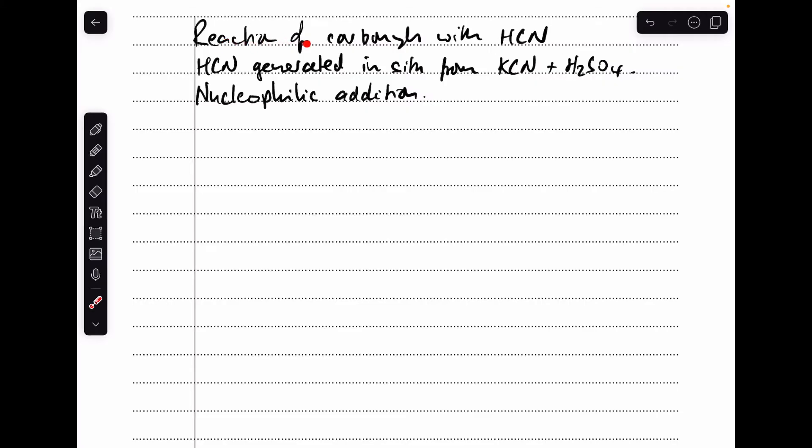I'm just going to run it the same sort of format as the first one. So this is the reaction of carbonyls, so aldehydes or ketones, with hydrogen cyanide. The hydrogen cyanide is actually generated in situ, so in the reaction, from a mixture of either potassium cyanide or sodium cyanide and sulfuric acid. And the type of reaction mechanism is nucleophilic addition this time. So the example I'm going to go for is propanol with a mixture of potassium cyanide and sulfuric acid.